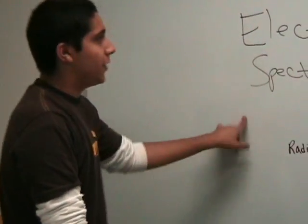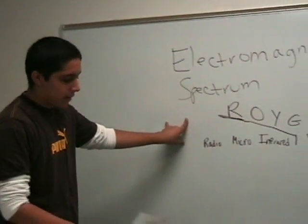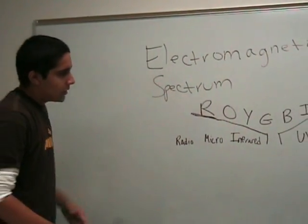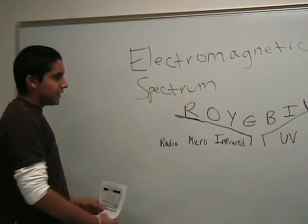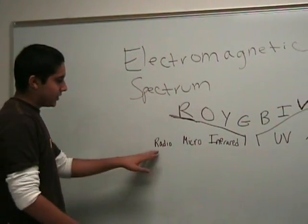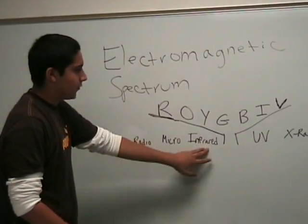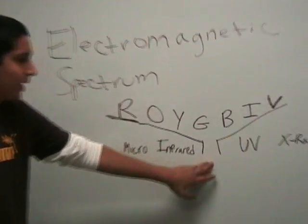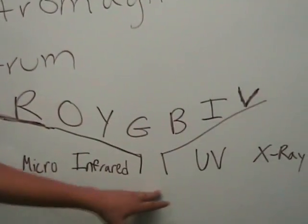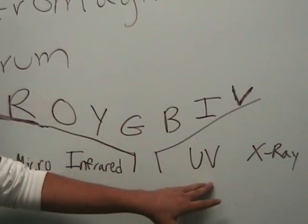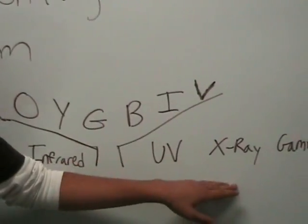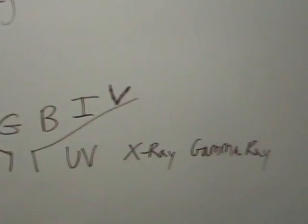Today I'm going to teach you guys about the Electromagnetic Spectrum. It's mainly composed of seven things: radio waves, microwaves, infrared, visible light waves, ultraviolet, X-ray, and gamma rays.